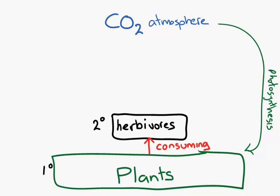I've drawn the herbivore box much smaller than the plant box for two reasons. Firstly, the plants are respiring all the time — as they respire, they're releasing CO2 back into the atmosphere. And secondly, herbivores in general do not eat all of the plants. We don't eat the roots, we just eat the leaves, the fruit, the carrot — not the top. So we're not getting all the carbon available there.